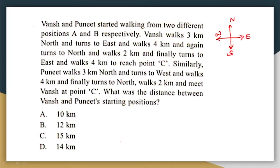What is Vansh doing? Let us assume Vansh is starting from this point. So Vansh is starting from here and he is going 3 km north. Then he turns right to east — east is this direction — and he is walking 4 km. And then he is again turning to north and he walks 2 km.